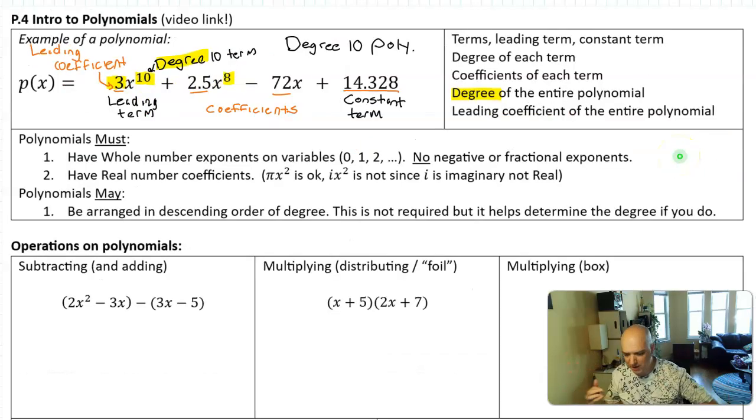There's a couple more rules about polynomials. First rule, the exponents attached to the variables must be whole numbers, that is 0, 1, 2, etc. No negative exponents, no fractional exponents, and the only time you'll have a 0 exponent is on, again, that constant term with x to the 0. Otherwise, whole number exponents, and they again are usually arranged in descending order of exponents, but it's not required.